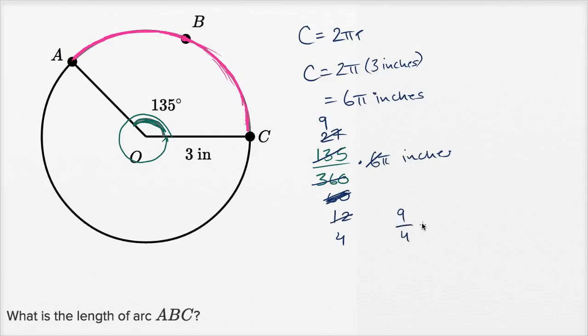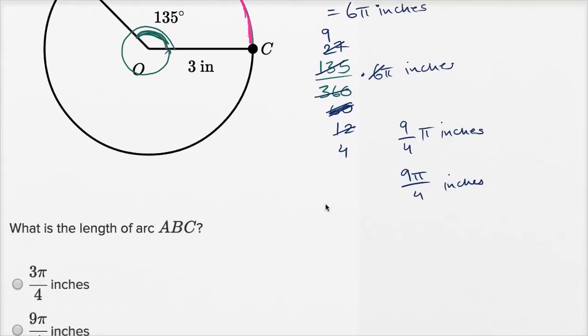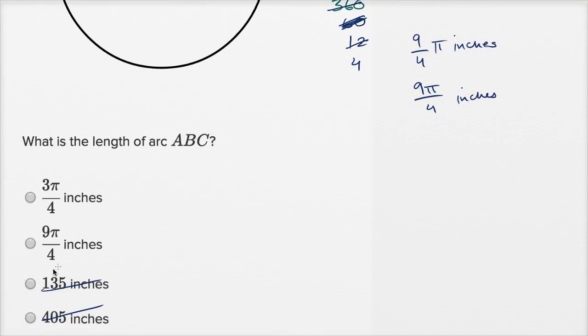So 9/4 times π inches, or we could multiply the numerator times π. We could say 9π over 4 inches. And when you look at the choices, that is this one right over there.